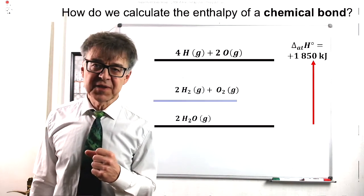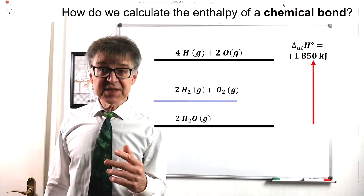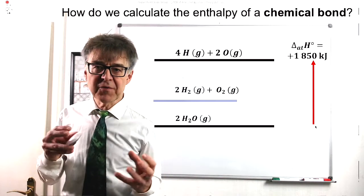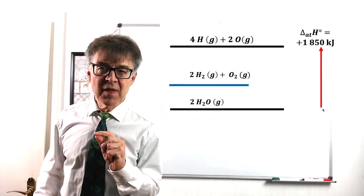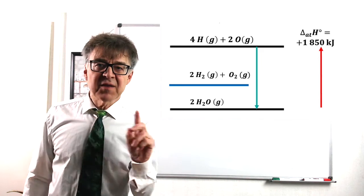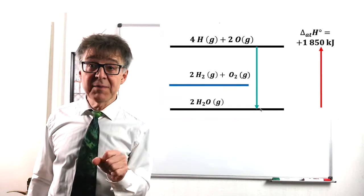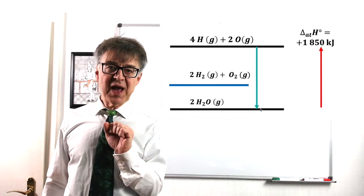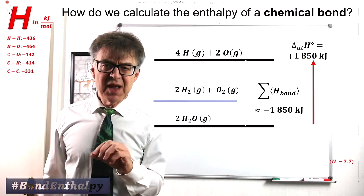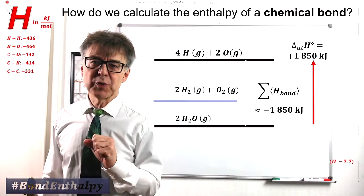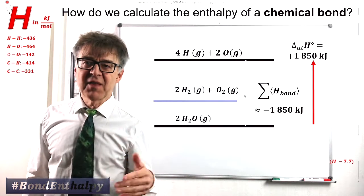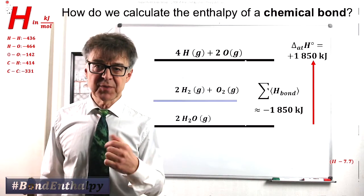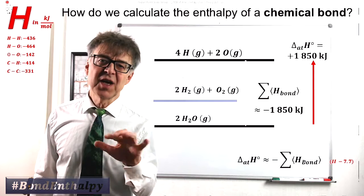Conversely, 1850 kJ would be released if two water molecules were formed from the atoms. This means this green arrow corresponds to four times the OH bond enthalpy. Bond enthalpies are usually average values. Therefore the statement that the sum of the bond enthalpies corresponds to the enthalpy of atomization is only approximate.